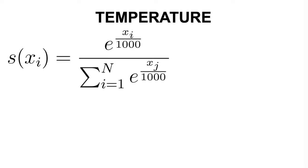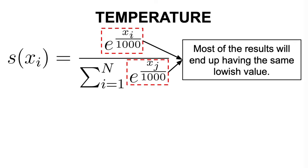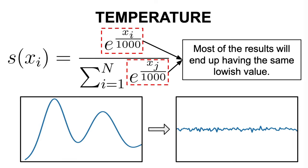A higher temperature, which translates to a division by a higher number in the exponent and a lower end result for each probability, increases the randomness by flattening the distribution, making it more likely to choose less probable words.